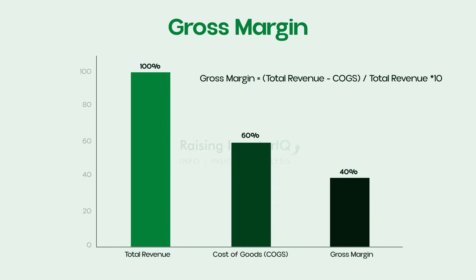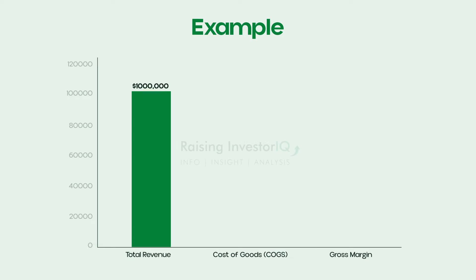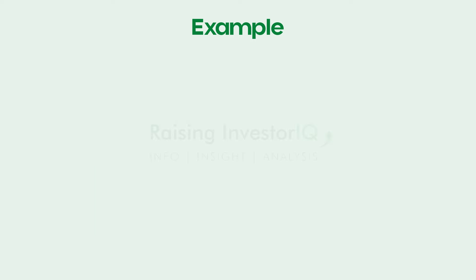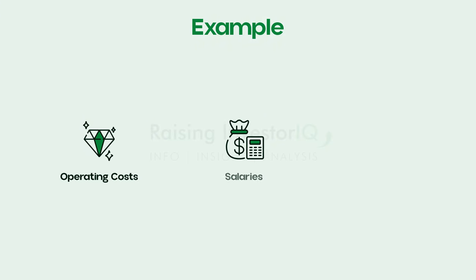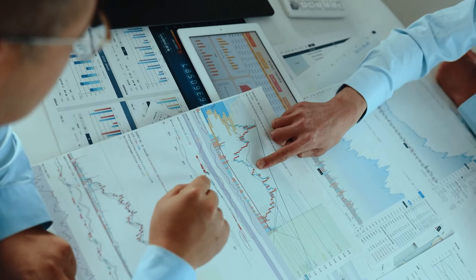Gross margin is calculated by taking the company's total revenue, subtracting COGS, and dividing the result by the total revenue. The final number, when multiplied by 100, gives you the gross margin percentage. For example, if a company generates $100,000 in revenue and its COGS is $60,000, then the gross margin is $40,000, or 40%. This means that for every dollar of sales, the company retains 40 cents in gross profit.